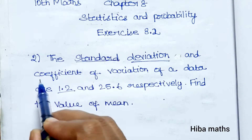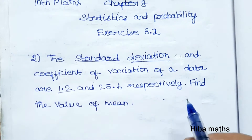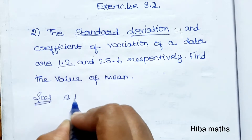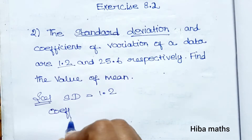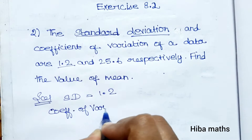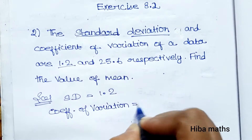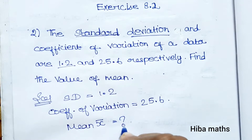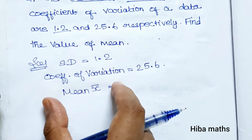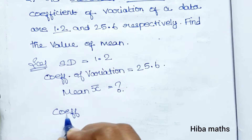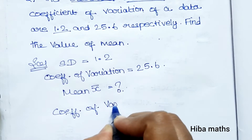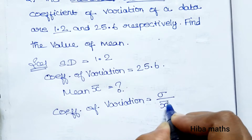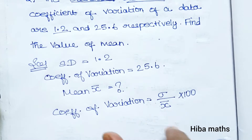Given: standard deviation = 1.2, coefficient of variation = 25.6. We need to find the value of mean. Solution: the formula for coefficient of variation is equal to standard deviation divided by mean, into 100.